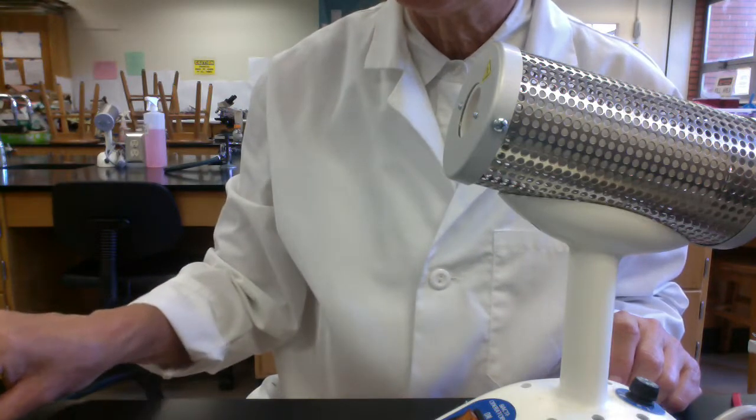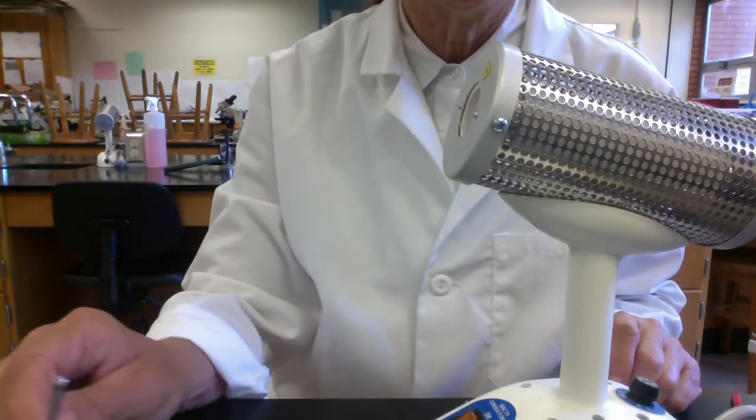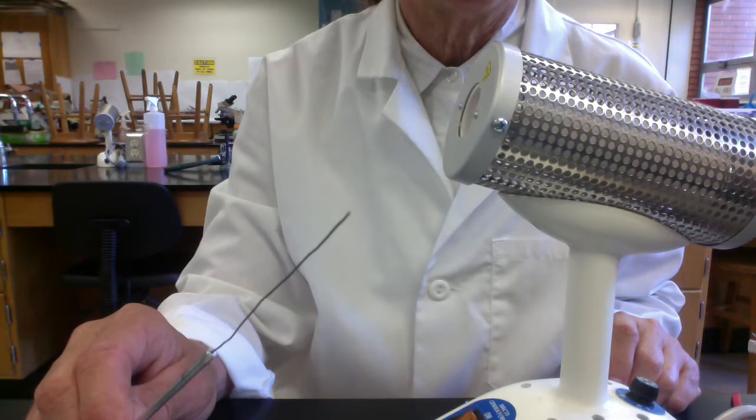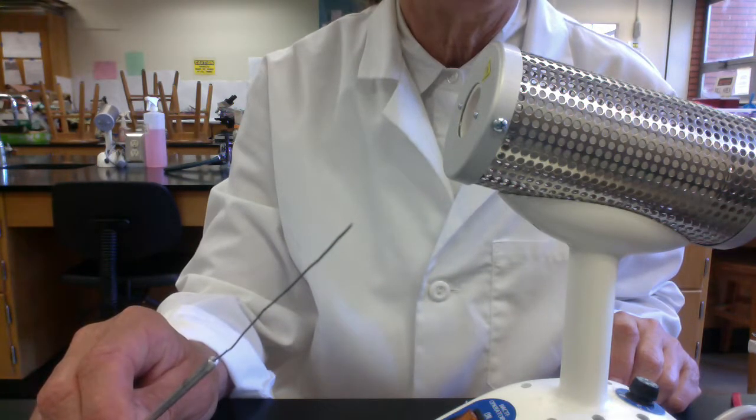Another transfer instrument that's used often is the inoculating needle. We'll be using this most often when we're stabbing agar deeps to get our microbes to grow anaerobically.